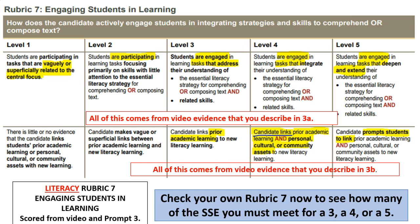This is the literacy rubric 7. Same structure — evidence from 3a comes from the top portion, evidence from 3b comes from the bottom. To get a three, students are engaged in learning tasks that address their understanding of the literacy strategy and related skills. At a four, students are engaged in learning tasks that integrate their understanding of the essential literacy strategy and related skills. At a five, students are engaged in learning tasks that deepen and extend their understanding of the literacy strategy and related skills.